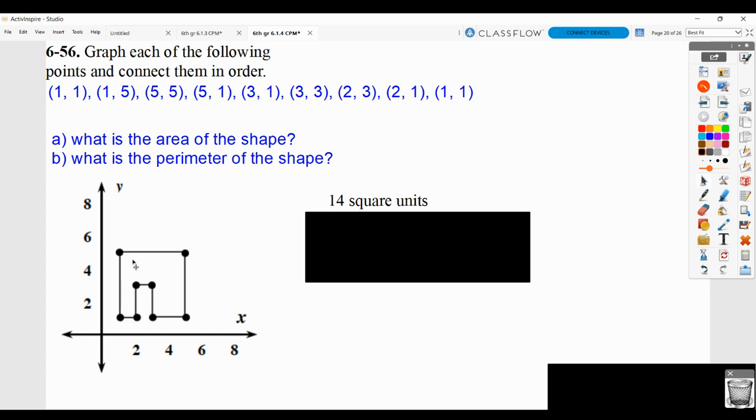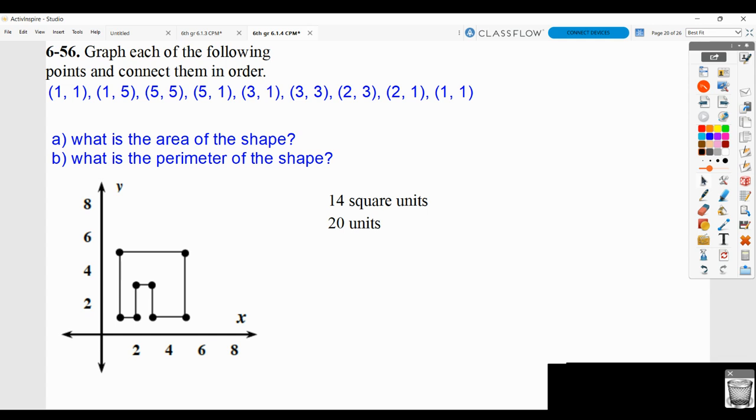Now, if you did this on graph paper, you could just count the number of squares inside here. But make sure, again, you show your work. And then the perimeter, again, if this is on graph paper, you can just count the number of units around the shape and getting you back to where you started, which is 20.